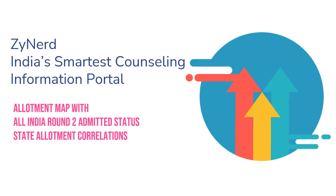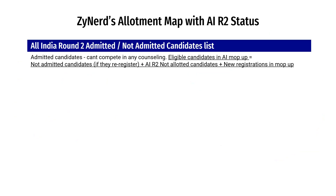This list has been shared with states to ensure they are not allotted in any other counseling. We have updated the All India Round 2 admitted status in the allotment map tool in Zainat. There were many queries on how to use this information to derive possibilities of vacancies for further counselings. We'll show you how the All India Round 2 admitted status can help you correlate with state allotments or All India mop-up allotments.